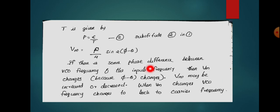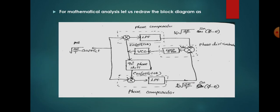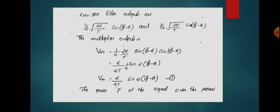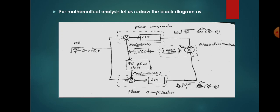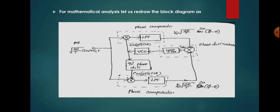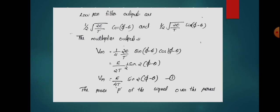If there is a phase difference between the VCO frequency and the input frequency, then Vm changes because (φ − θ) changes. Vm may increase or decrease, and when Vm changes, the VCO frequency changes to track the carrier frequency. Once phase-lock is achieved, the carrier frequency is recovered and we can generate the reference carrier at the receiver side. We have covered carrier synchronization methods — the Costa's loop and the Mth power loop. That's all about synchronization. Thank you.